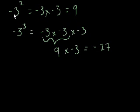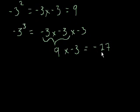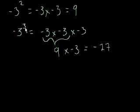So we get negative 27. That's interesting. When you have a negative number to the second power, you get a positive number — negative 3 squared equals 9. When you have a negative number to the third power, you get another negative number. So whenever you have a negative number to an even power, it becomes positive, and whenever you have a negative number to an odd power, it becomes negative.